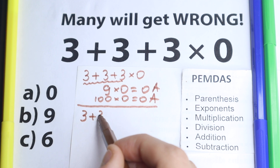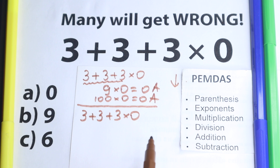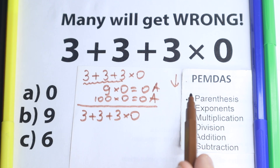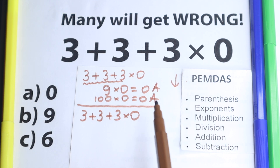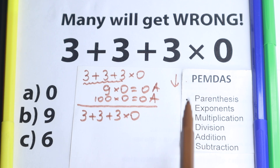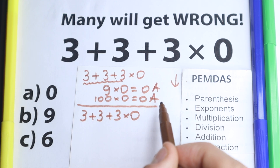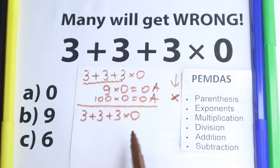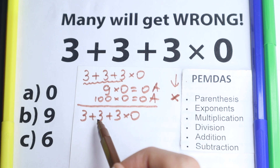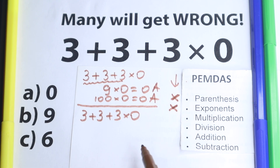We have 3 plus 3 plus 3 times zero. PEMDAS works from top to bottom, and I want to say that regardless of which order of operations you use, every time you will get the same answer. So let's solve it according to PEMDAS. The first step is parentheses — where do we have parentheses? I don't see any parentheses, so we skip this part. Next, exponents — I don't see any exponents either, so we skip this part as well.